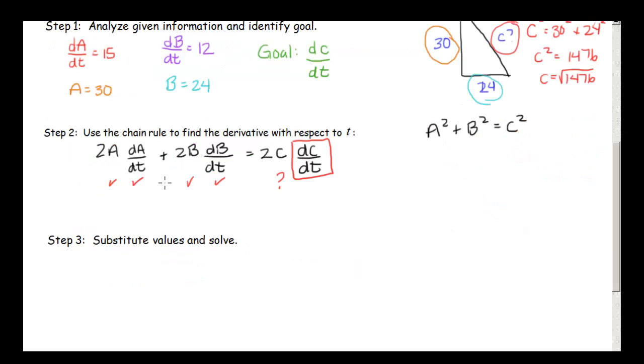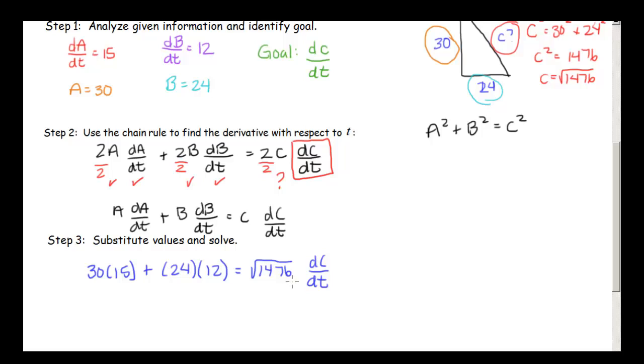So now let's plug everything in. To make our lives easier, before we start plugging things in, do you notice how we have a 2 in this term, a 2 in this term, and a 2 in this term? We can divide everything by 2. And that makes all those 2's go away. And then we have just A dA dt plus B dB dt equals C dC dt. So plugging in our numbers, we have 30 times 15 plus 24 times 12 equals the square root of 1476 times dC dt. And all we have to do is divide out by this. So our dC dt is 738 over the square root of 1476, which is approximately equal to 19.2 miles per hour.